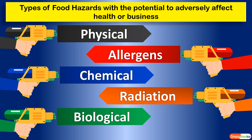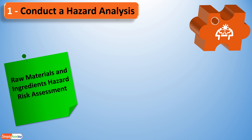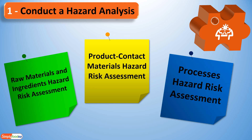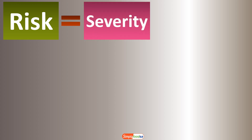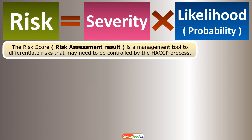In the upcoming videos, I will also train you on how to make a complete risk assessment for each raw material and ingredient. Now let's go directly to HACCP Principle 1: conducting the hazard analysis. There is a small equation for risk: Risk = Severity × Likelihood (or probability). The risk score is a management tool to differentiate risks that may need to be controlled by the HACCP process.